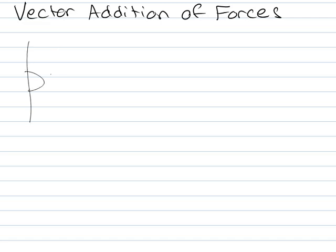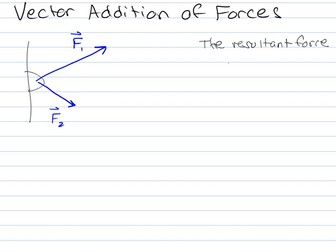So if I've got some kind of a hook sticking out of a wall, and I've got a force here, and then I have some other force here, completely arbitrary forces F1 and some force F2. If I want to know what the resultant force is of these two forces, it is the vector sum of the two forces.